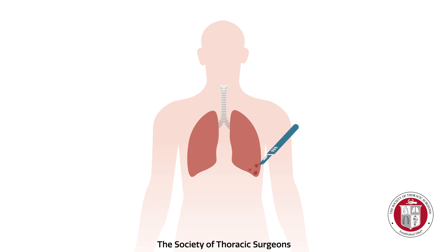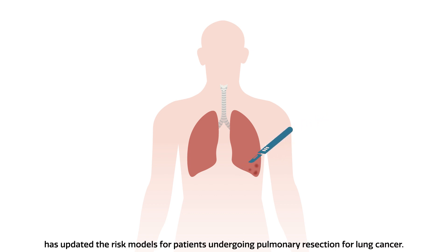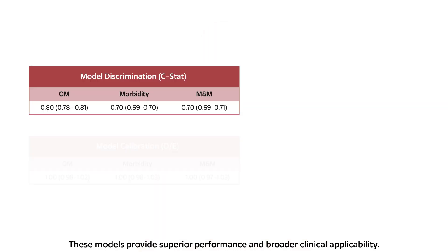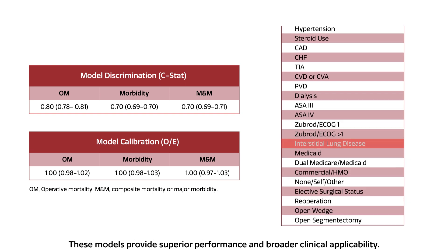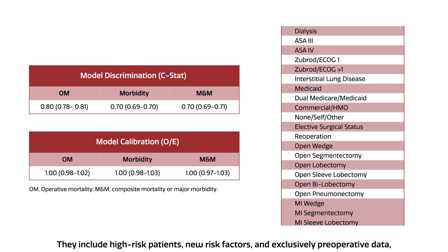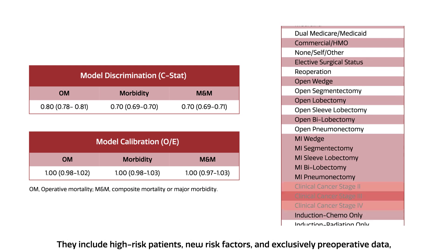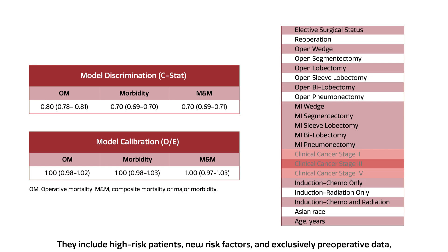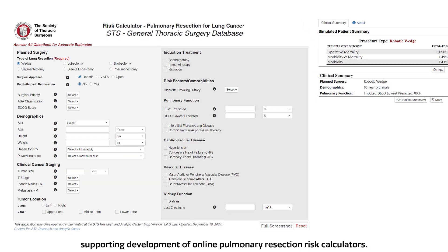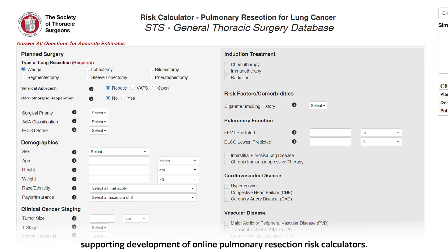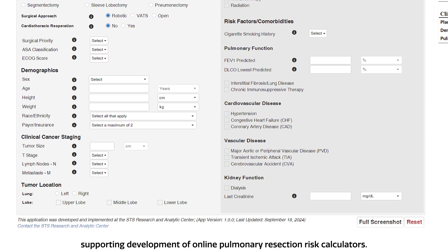The Society of Thoracic Surgeons has updated the risk models for patients undergoing pulmonary resection for lung cancer. These models provide superior performance and broader clinical applicability. They include high-risk patients, new risk factors, and exclusively preoperative data supporting the development of online pulmonary resection risk calculators.